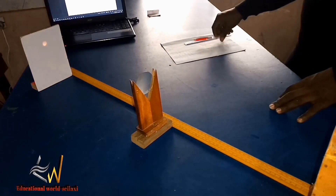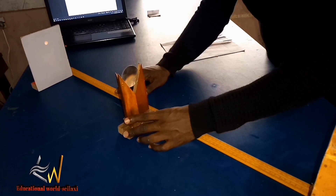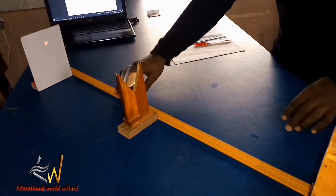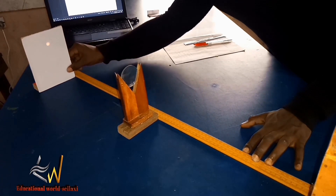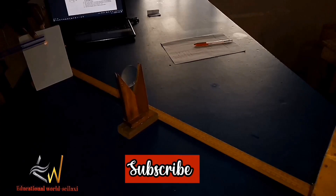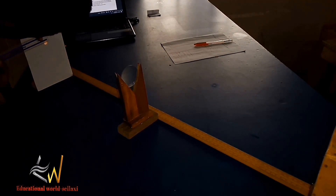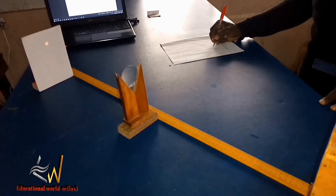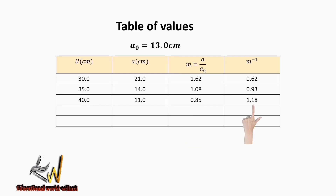We now adjust the position of the lens holder to a distance of 40 cm. After doing that, we adjust the position of the screen so that a clear image is formed. Measuring the diameter of the image gives a value of 11.0 mm. In our table of values, when U is 40.0 cm, A is 11.0 mm. The magnification is 0.85 and the inverse is 1.18.